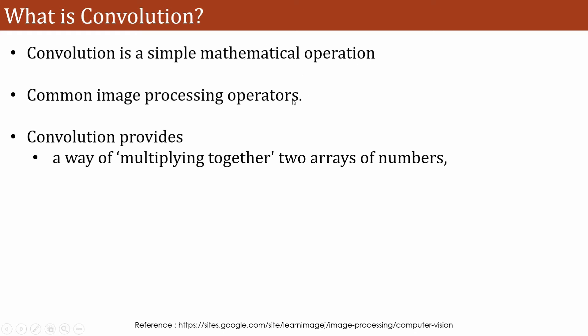Here you can see that to have the convolution we require two entities, that is we require two arrays or two matrices.